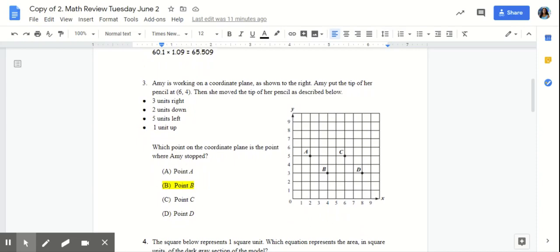Number three, Amy is working on a coordinate plane as shown to the right. Amy put the tip of her pencil at 6, 4. Then she moved the tip of her pencil as described below. Remember 6 is our x coordinate and 4 is our y coordinate.